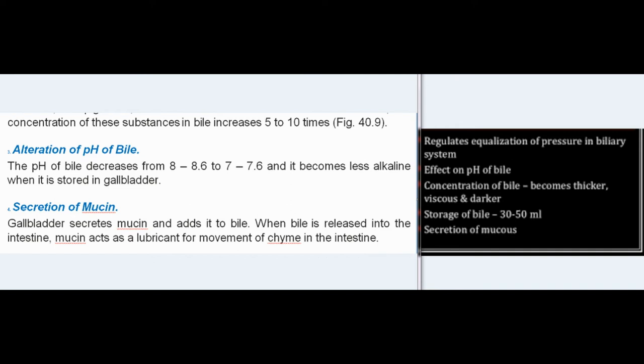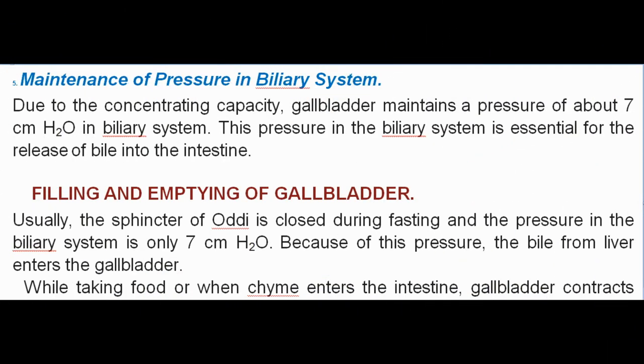The pH of bile decreases from 8–8.6 to 7–7.6, becoming less alkaline when stored in the gallbladder. The gallbladder secretes mucin and adds it to bile; when bile is released into the intestine, mucin acts as a lubricant for movement of chyme. Due to its concentrating capacity, the gallbladder maintains a pressure of about 7 cm H₂O in the biliary system, which is essential for the release of bile into the intestine.